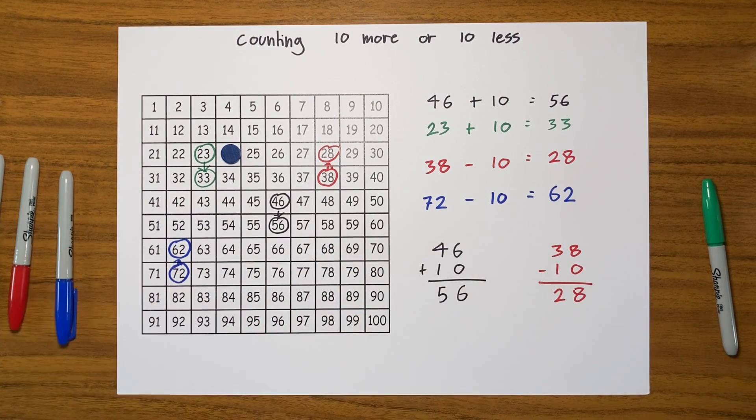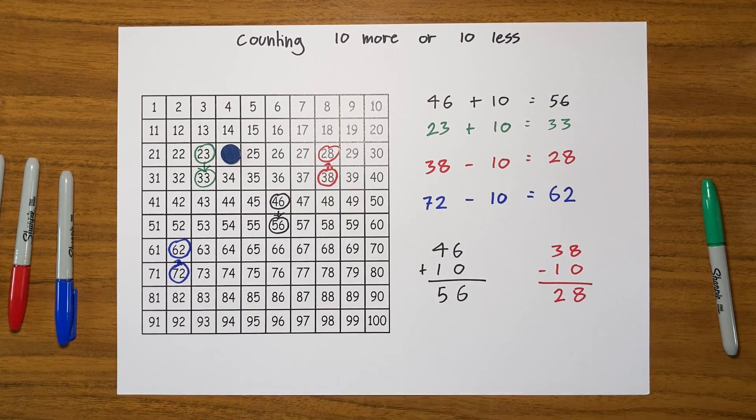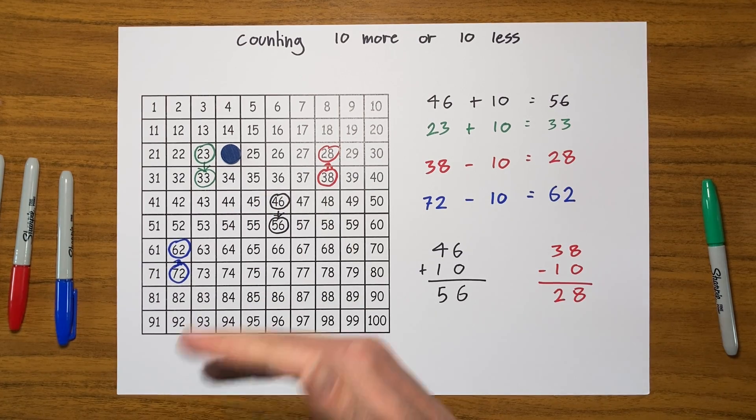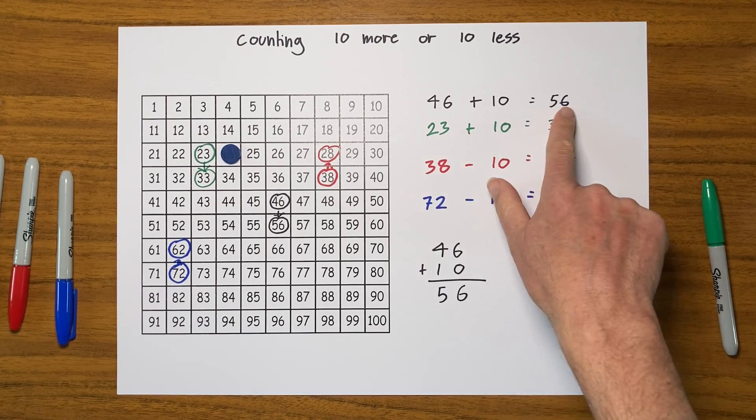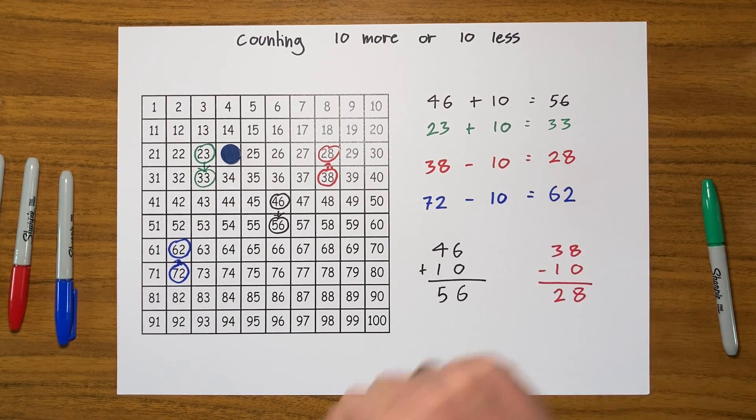Get your 100 square out, get yourself a counter, and practice going 10 more or 10 less. It's always useful to write down what you're doing in what we call - this is a number sentence - and practice drawing your numbers. And as always, good luck!